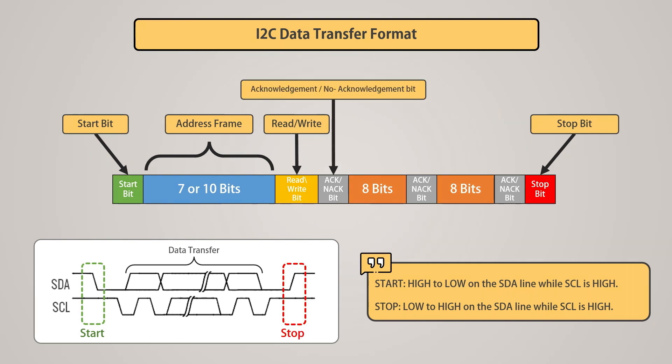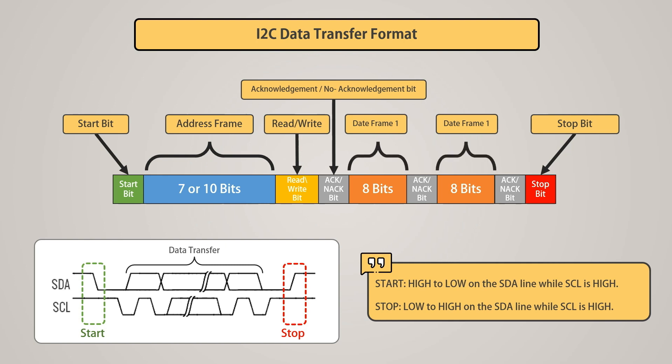The acknowledge or no-acknowledge bit is the subsequent bit of every frame in a message. When data or an address is successfully transmitted, the ACK signal is sent back to the sender from the receiver device. When the ACK bit is detected by the master from the slave, it indicates that the first data frame can be transferred. This data frame is 8 bits in length. After the data frame, an ACK or NACK bit confirms successful transmission, and once successful, the next data frame is ready to transmit.